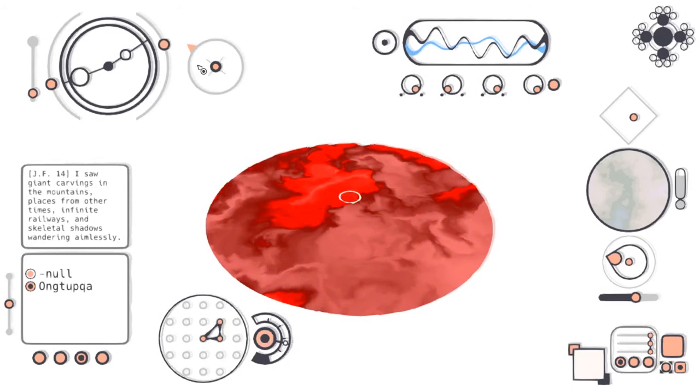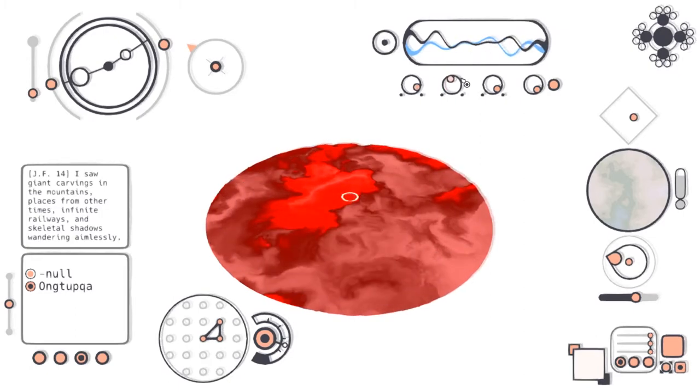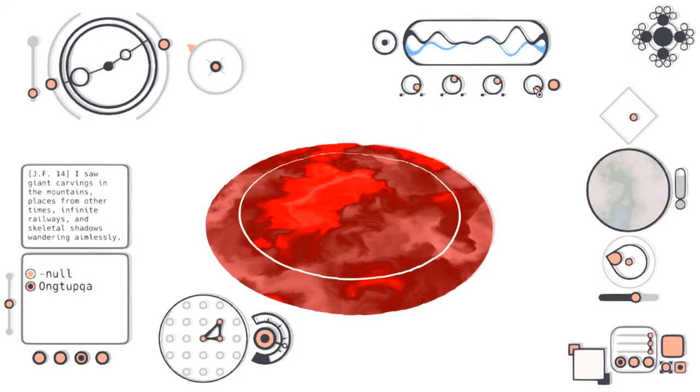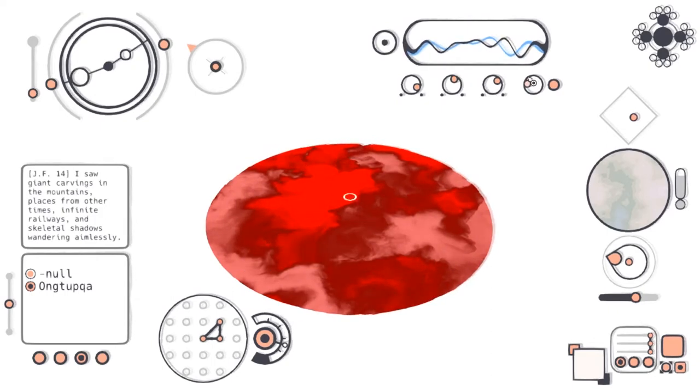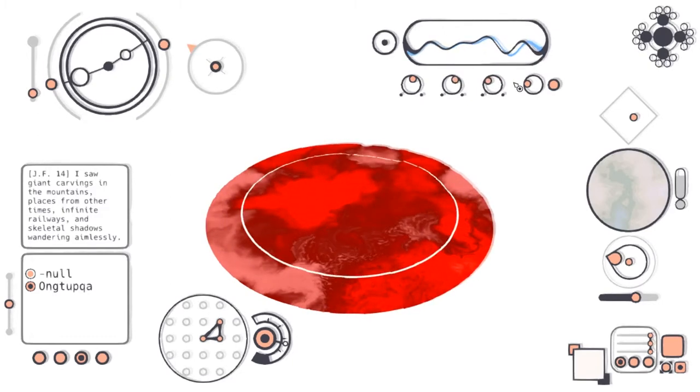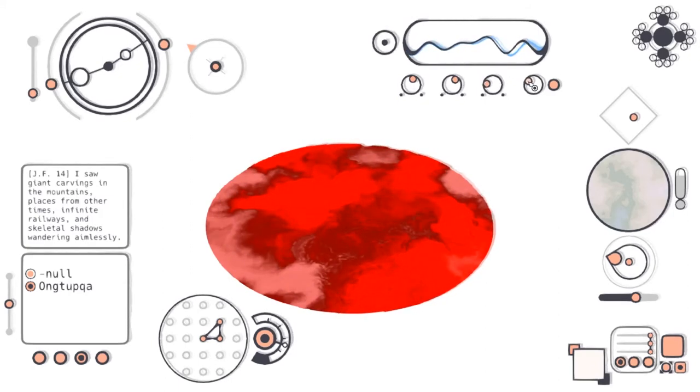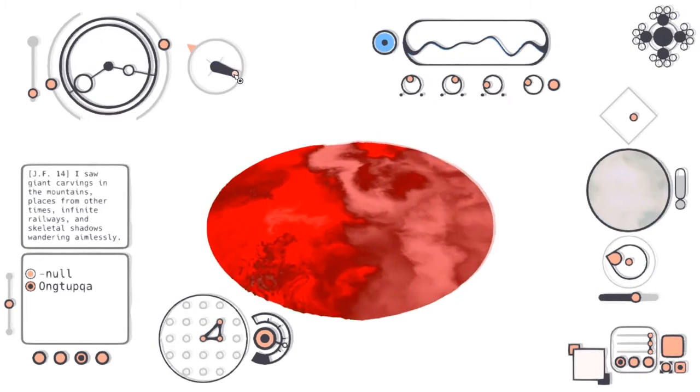Ong Tupka. I saw giant carvings in the mountains, places from other times, infinite railways, and skeletal shadows wandering aimlessly. This is sending us this way. We've got blue up here. Looks like that goes that way. This is quite difficult.